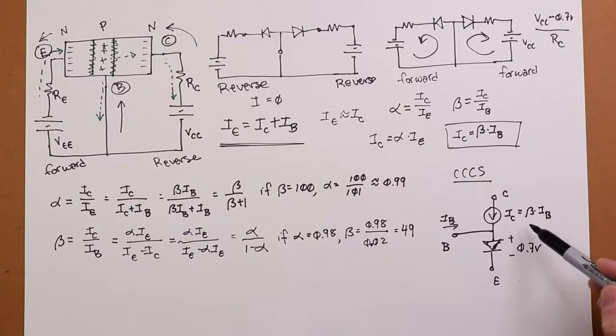Okay. So typical numbers for beta, small signal transistors, 100, 150, 200, maybe 250. For power transistors, because they're beefier, not quite as high, maybe 50, something like that, 30, all depending.